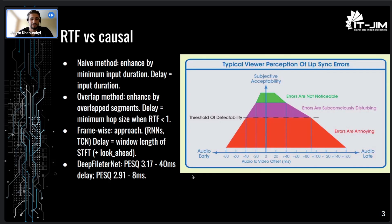That's why the best approach is when models are specifically designed for a frame-wise method. We transform our audio signal with a Short-Time Fourier Transform, and then the model consumes each frame separately — taking one frame as input and outputting one frame. The basic structures for these models are recurrent neural networks like LSTM, and temporal convolutional networks, which are also often used in this field.